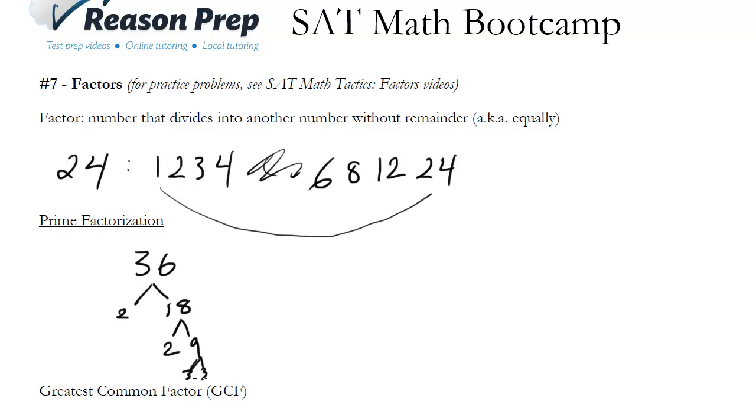And 9 I can break into 3 and 3. And there we go, so my prime factorization is 2, 2, 3, 3, and we can write it as 2 times 2 times 3 times 3. If you multiply those out you'd see it would equal 36. You'll never be asked really a specific question about finding the prime factorization, but it's just a useful thing to know.